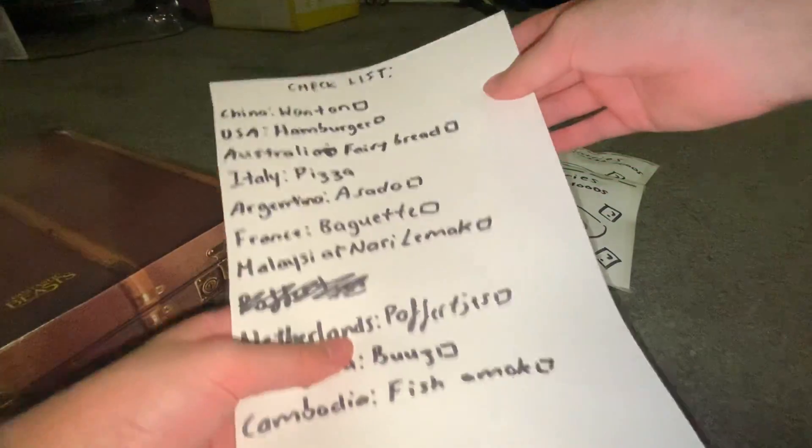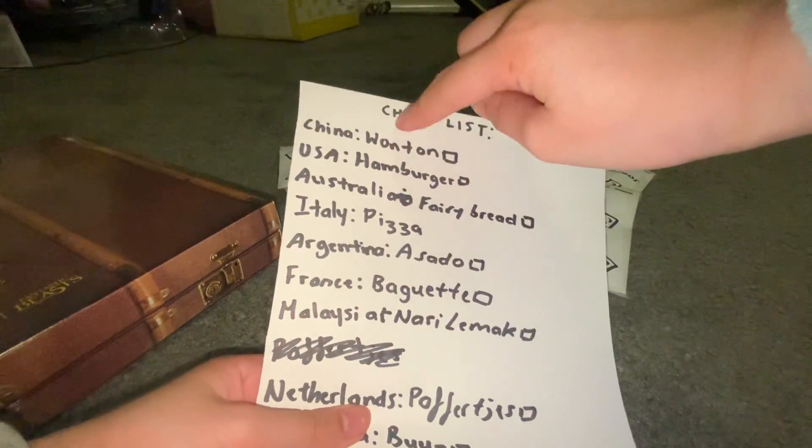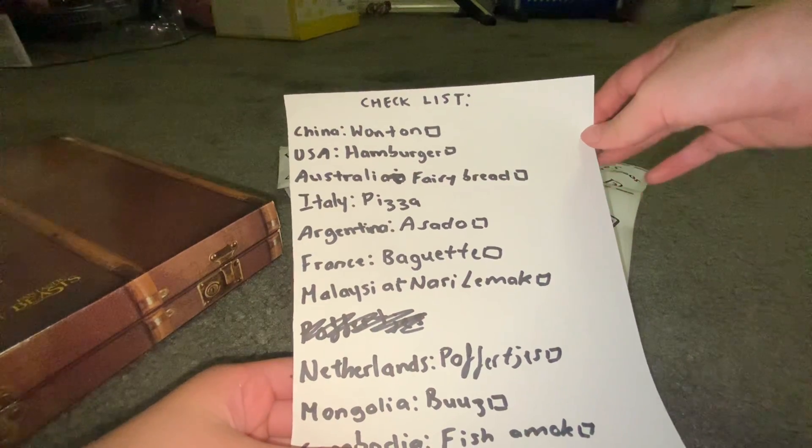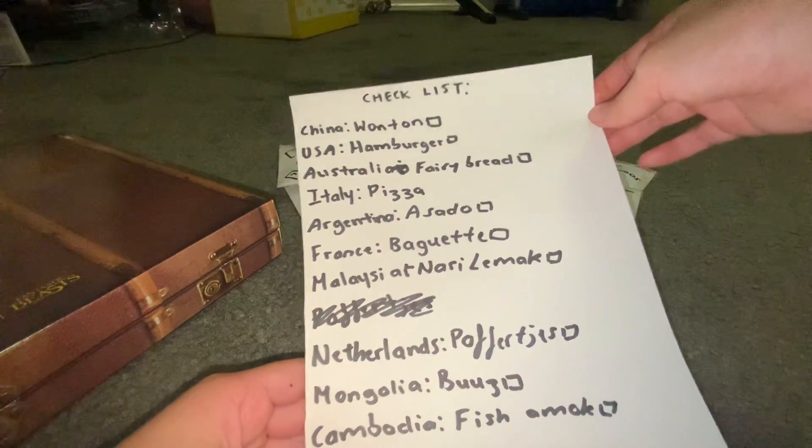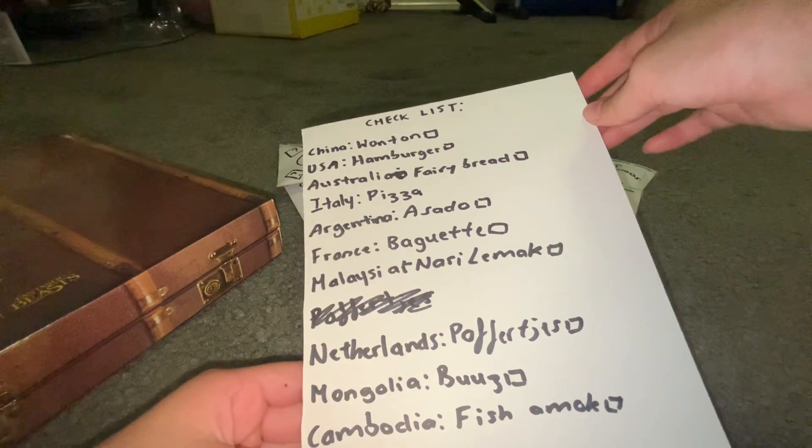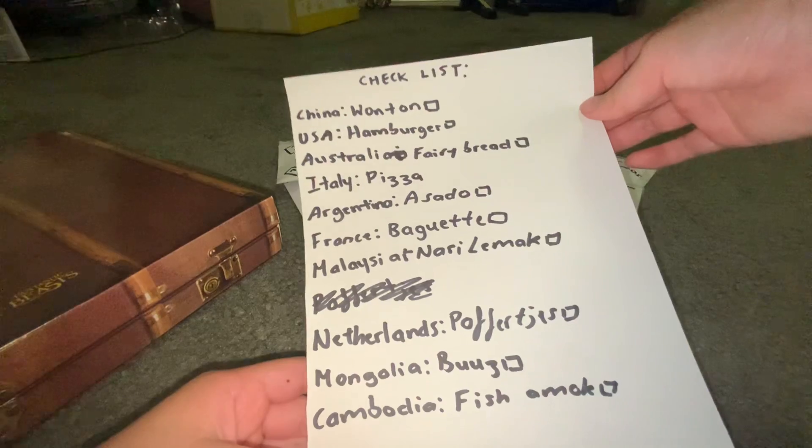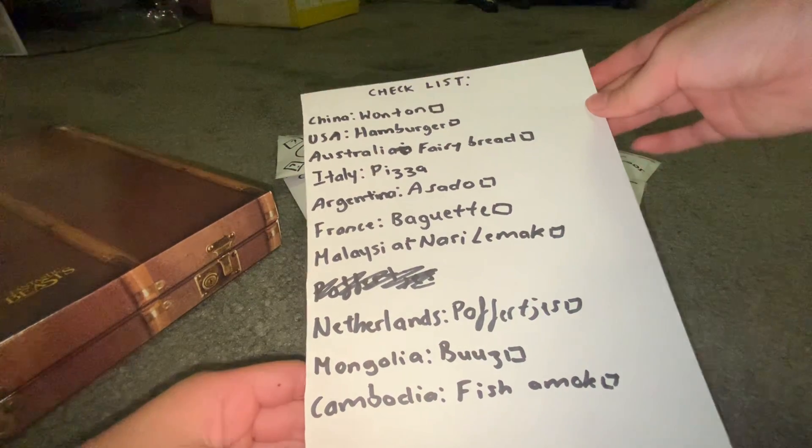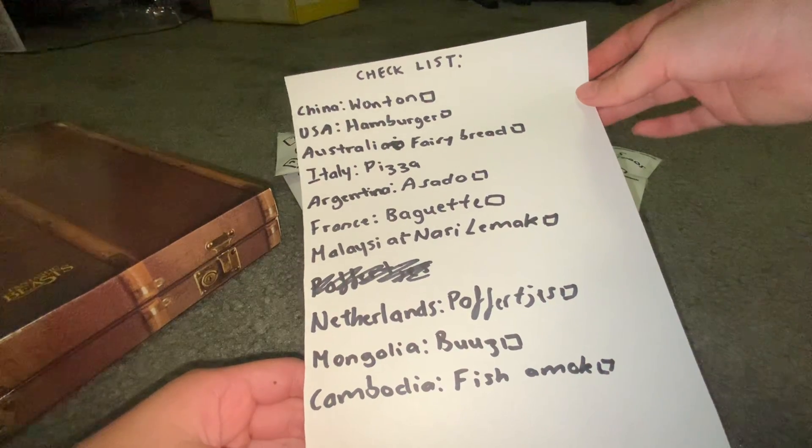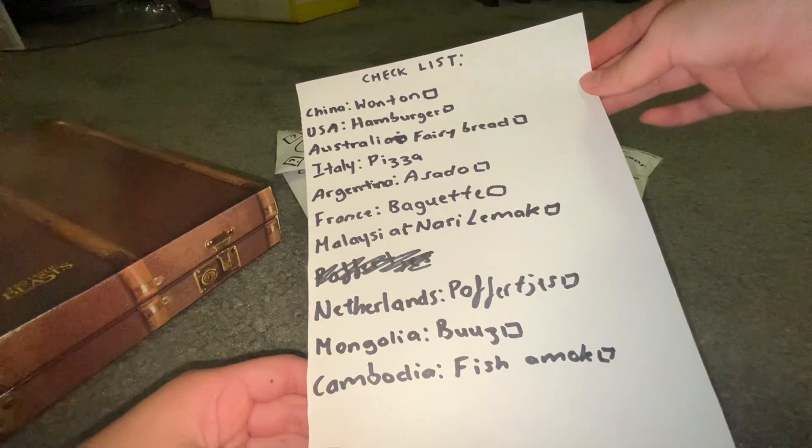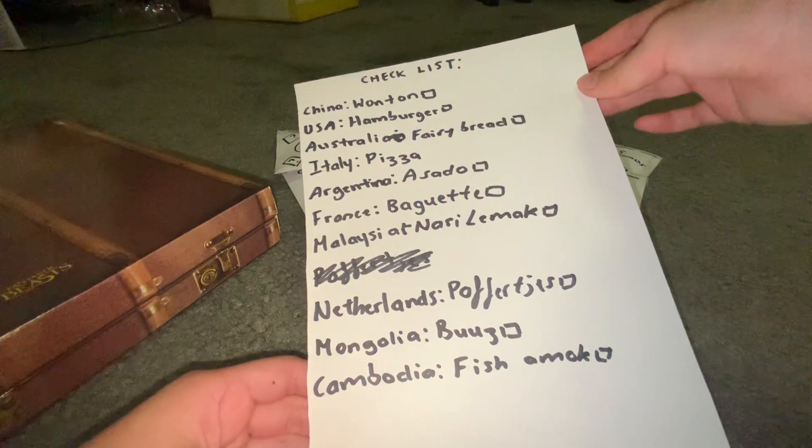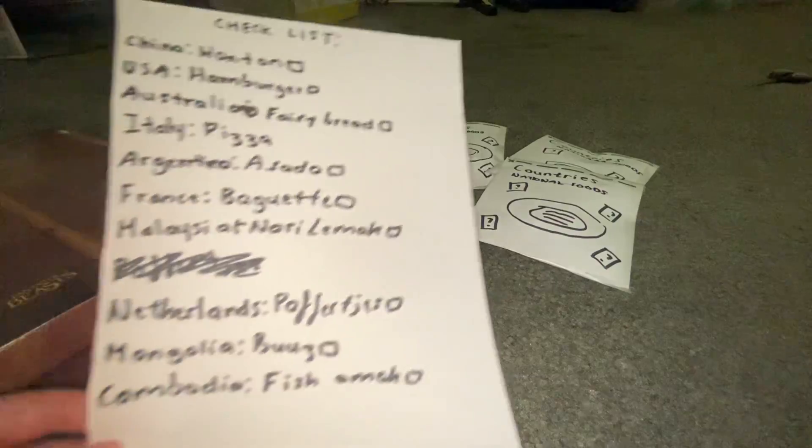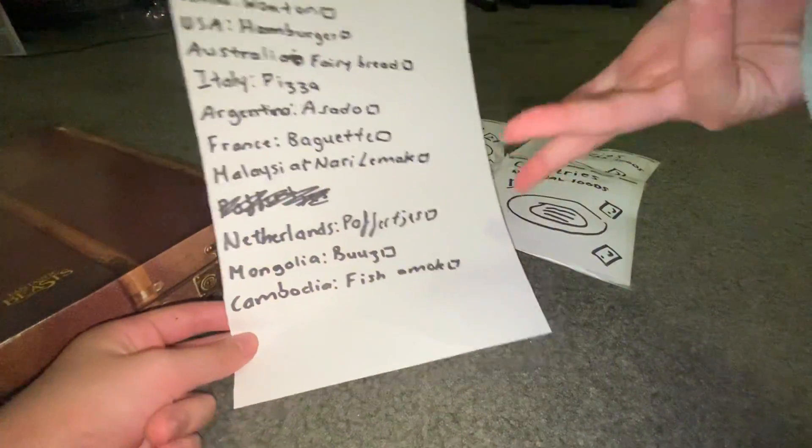We got China wonton, USA aka America hamburger, Australia fairy bread, Italy pizza, Argentina asado, France baguette, Malaysia nasi lemak, Netherlands poffertjes, Mongolia buuz, and Cambodia fish amok. So where are you from?